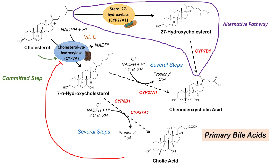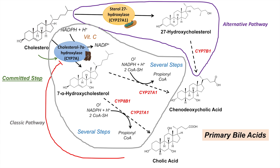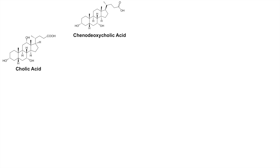Of note, cholic acid is not produced from the alternative pathway — only chenodeoxycholic acid is produced from the alternative pathway. The classic pathway involves cholesterol-7-alpha-hydroxylase (CYP7A), located in the endoplasmic reticulum, which processes 7-alpha-hydroxycholesterol through several steps to produce both primary bile acids: cholic acid and chenodeoxycholic acid.